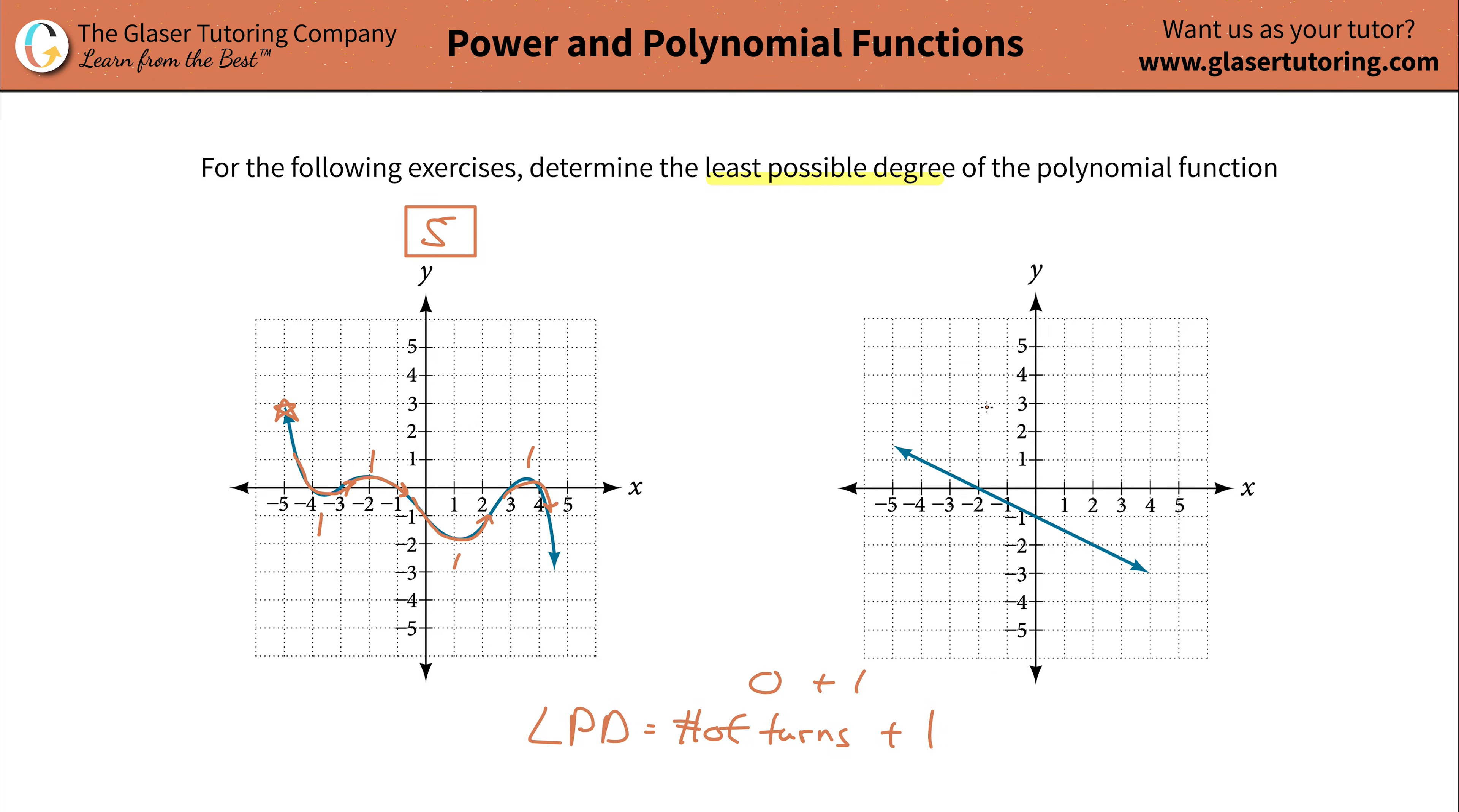So take zero, add one to it, and obviously zero plus one is going to be one, so it could be a first degree polynomial, which would just be like x raised to the first power.